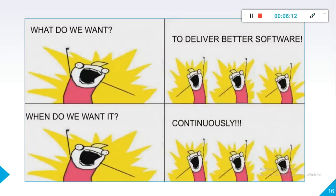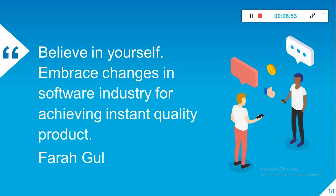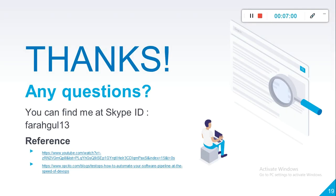Why should we learn TestOps skills? We want to deliver better software products, and we want to do it continuously. We need speed and quality at the same time. If we are late to market with better quality, we lose customers. If we are quick to market with poor quality, we also fail. So we need to achieve speed and quality with quick wins. Believe in yourself and embrace changes in the software industry for achieving instant quality products.